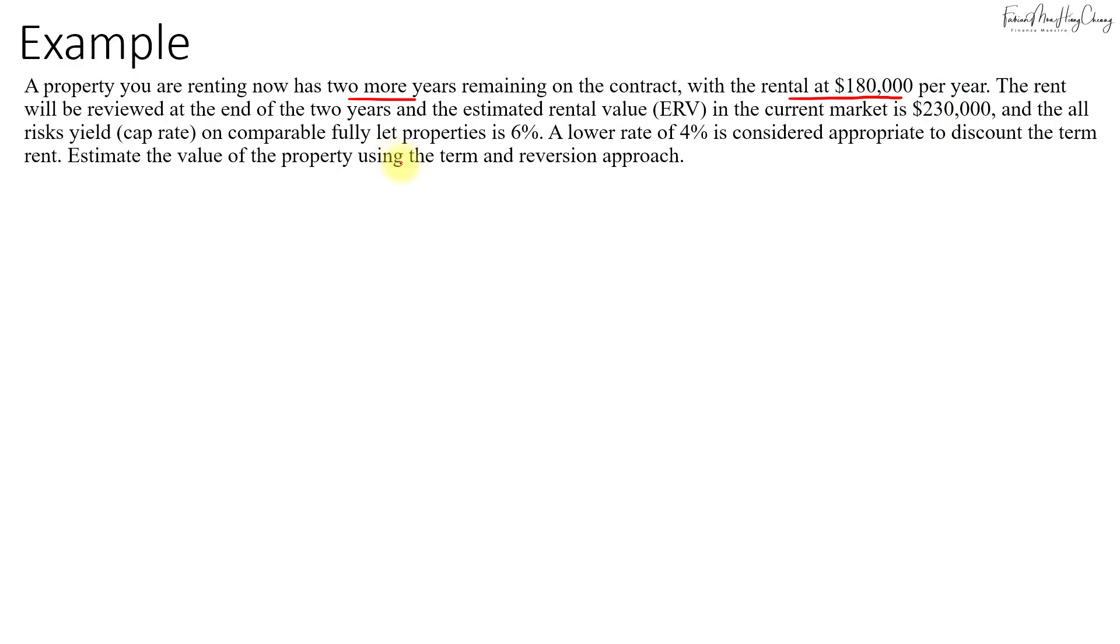The all-risk yield or cap rate on comparable fully let properties is 6%. A lower rate of 4% is considered appropriate to discount the term rent, which is $180,000. Estimate the value of the property using the term and reversion approach.